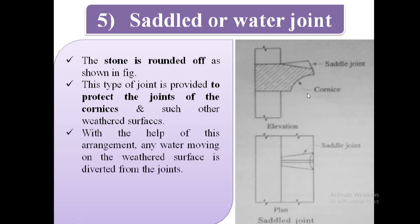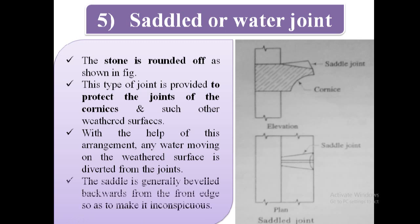With the help of this arrangement, any water moving on the weathered surface is diverted from the joints, so it is called as water joint. The saddle is generally beveled backwards from the front edge so as to make it inconspicuous.